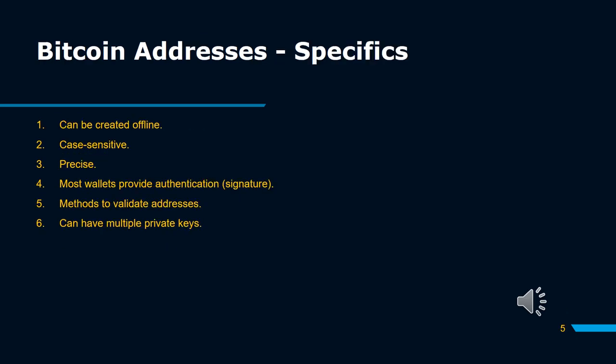Bitcoin address specifics: 1. Can be created offline. 2. Case sensitive. 3. Precise. 4. Most wallets provide authentication and signature. 5. Methods to validate addresses. 6. Can have multiple private keys.